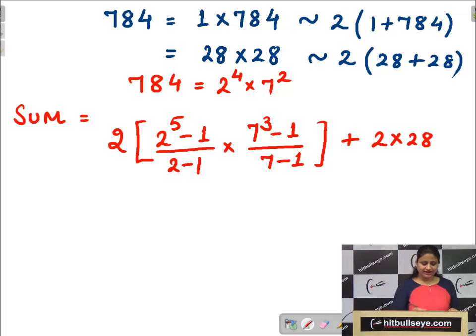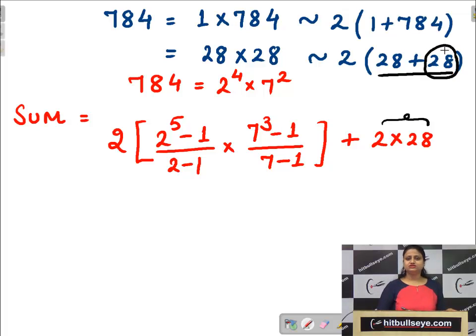Plus, now that was the catch, twice into 28. Why are we adding 28 twice in the total sum? Because we are considering this rectangle where both the sides are 28 and 28. Of course, a square is also a rectangle. So there is a factor 28 which we have counted twice. Corresponding to that I am taking twice of 28.